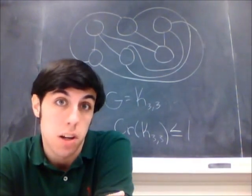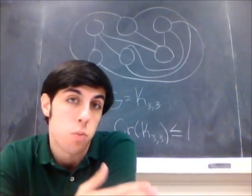As it turns out, the crossing number actually is one, meaning there always is going to be at least one crossing. It's not a planar graph.